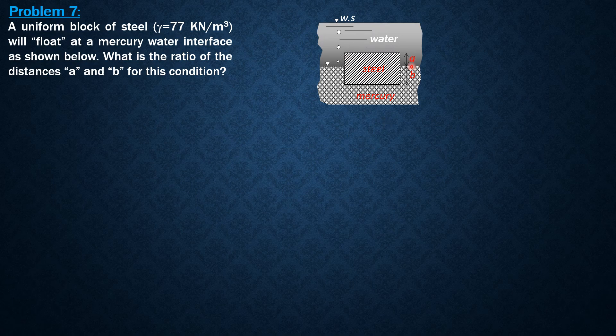This is the given figure. We have the steel block resting on a layer of water and mercury, fully submerged. Part of the steel block is submerged in water and the other part is in mercury. We have here the portion in water a and portion in mercury b, so the total depth of the steel block is a plus b.